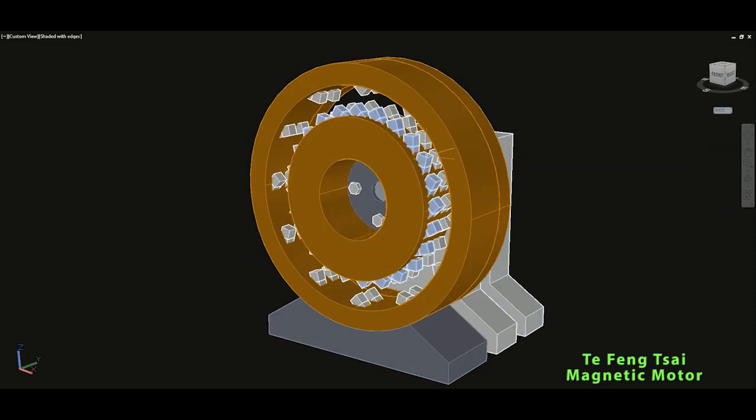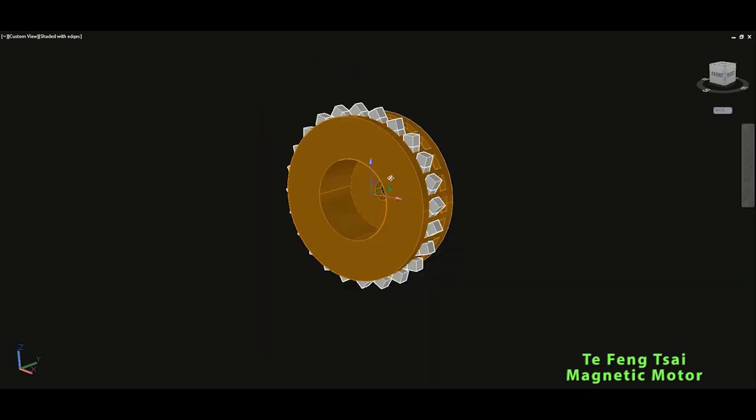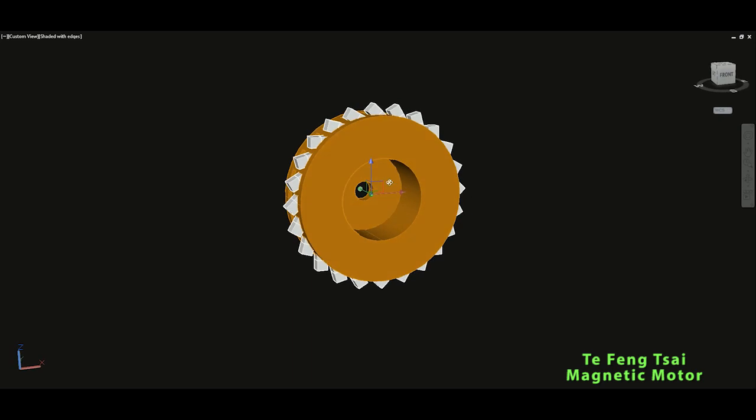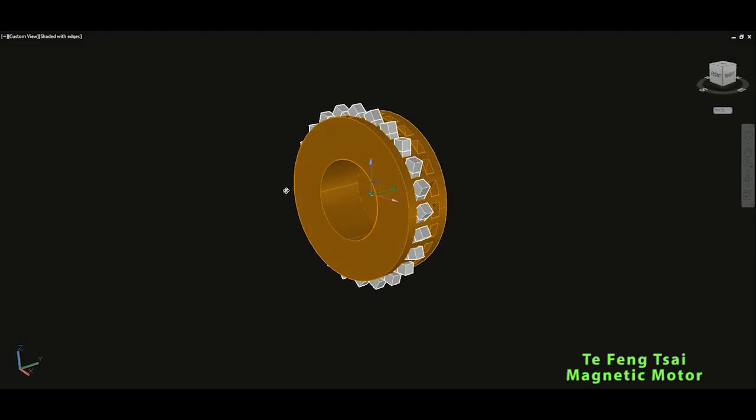The rotor, on the other hand, as you can see if I select the magnets, would have 24 magnets in two rows. So that's double the number of magnets on the stator would be in the rotor.